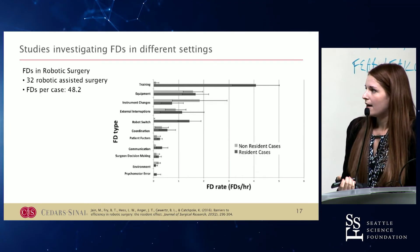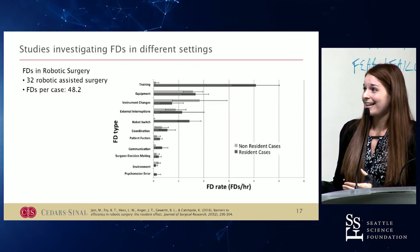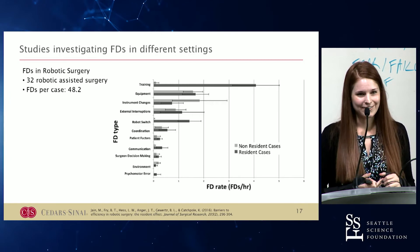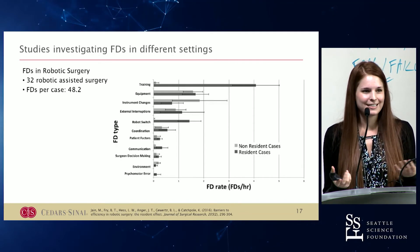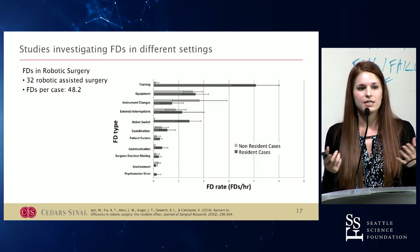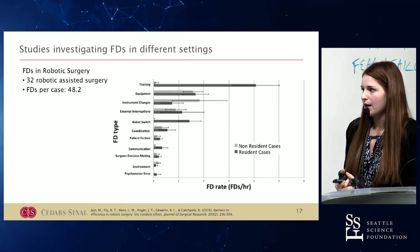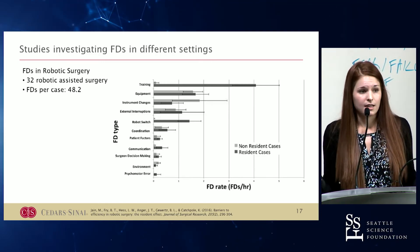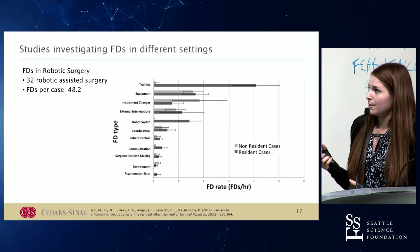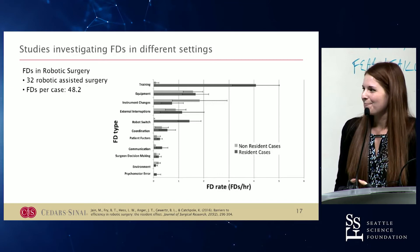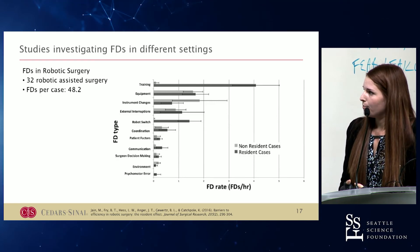My colleagues also looked at robotic surgery and how flow disruptions impact individuals there. This study is really interesting because they looked at flow disruptions with residents versus without residents. Expectedly, cases with residents had more disruptions. Attendings can probably attest to this — when you're taking time to train or teach, you may be slowing down, having more questions, or more communication going on in the room. Flow disruptions aren't necessarily a bad thing — they can just help you understand where inefficiencies lie. There were significantly more disruptions associated with training when residents were in the room.